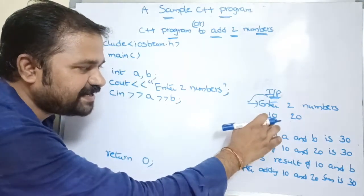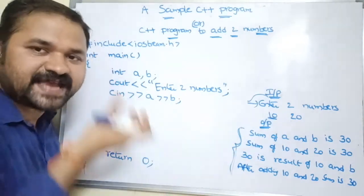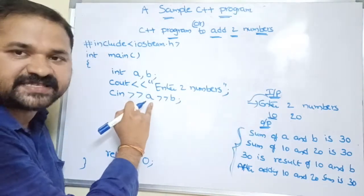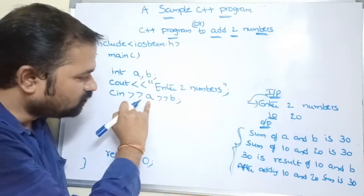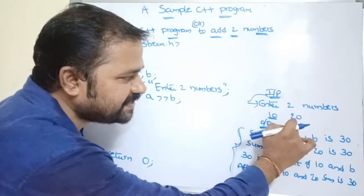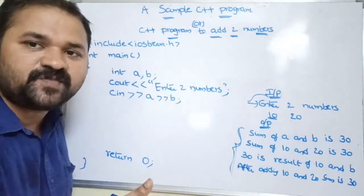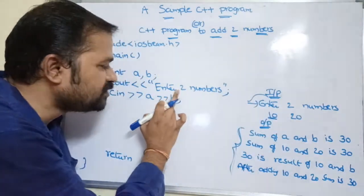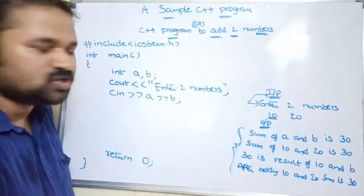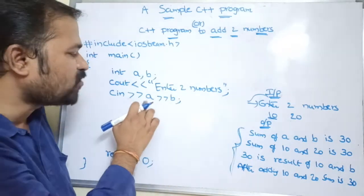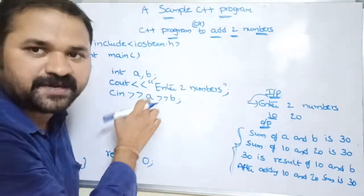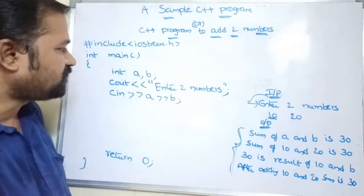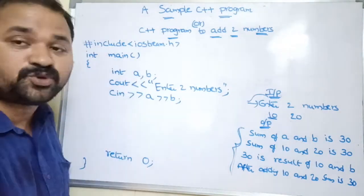The first value we enter is 10, so 10 will be extracted from the keyboard and assigned to a. The next value is 20, so 20 will be extracted and assigned to b. So now the value of a is 10 and the value of b is 20.